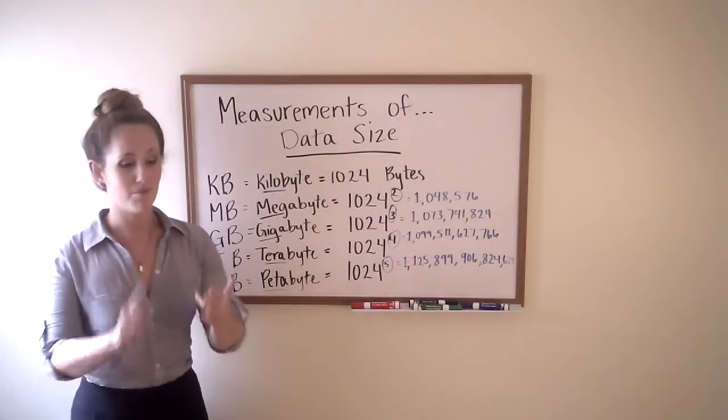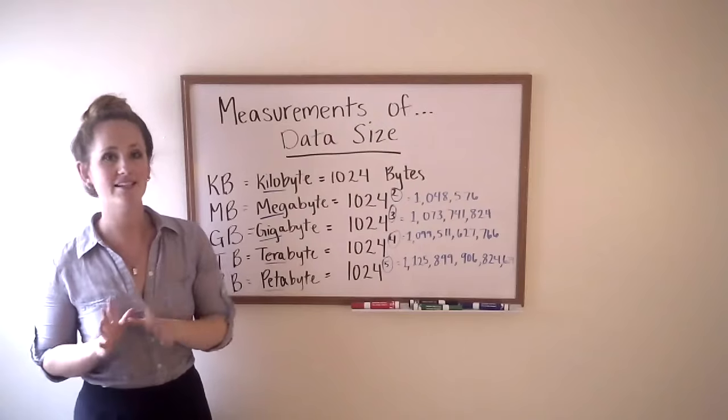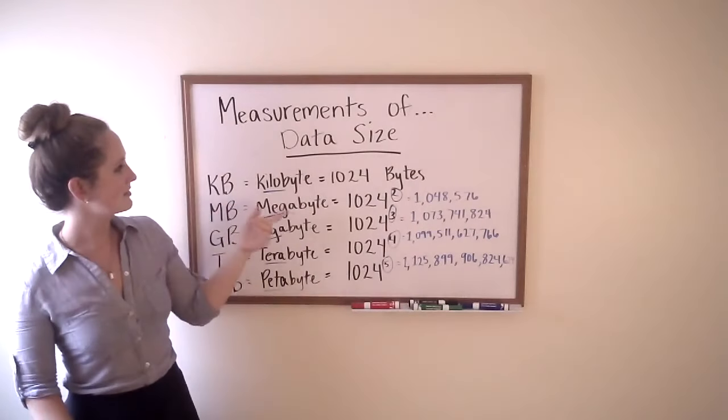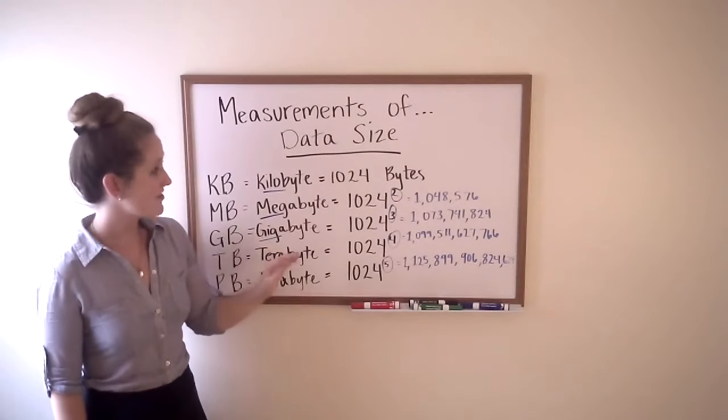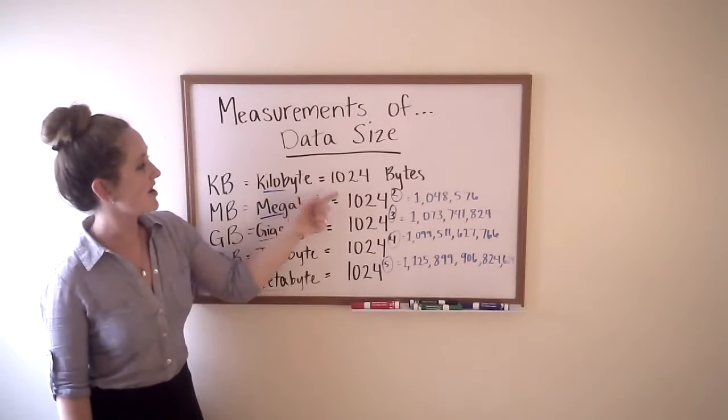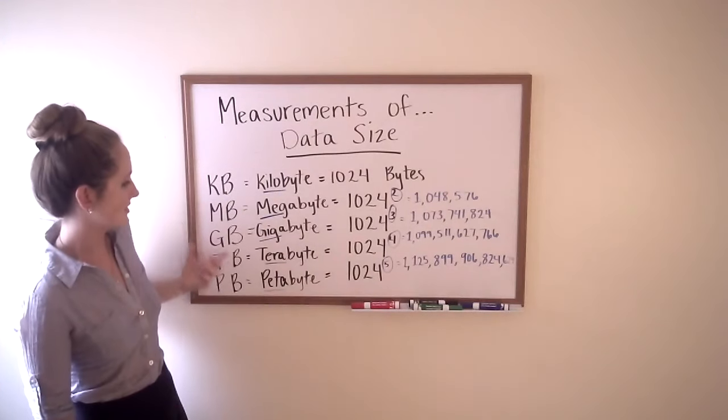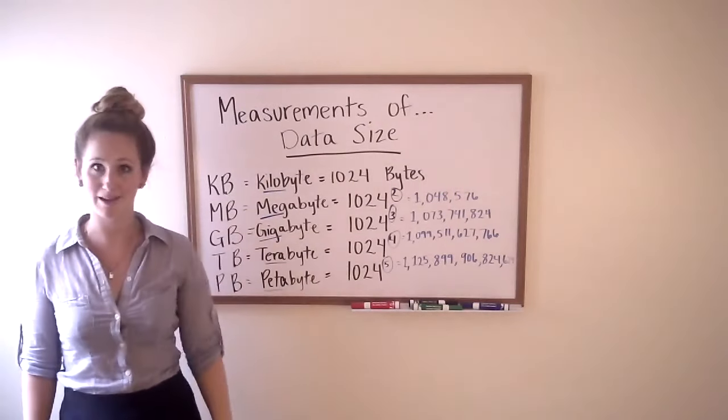All right, just a quick review. Bit, tiny little, either one or zero, byte, eight bits, kilobyte, 1024 bytes. After that, everything is an exponent off of 1024, going from kilobyte to megabyte to gigabyte to terabyte, all the way up to a petabyte.